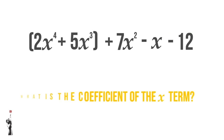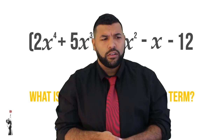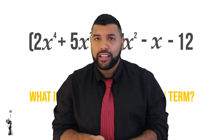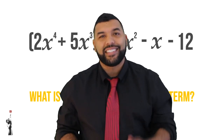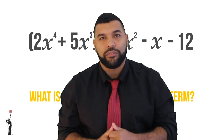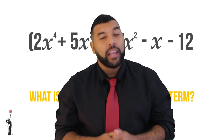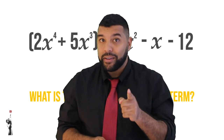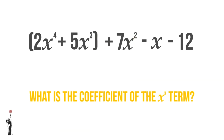What is the coefficient of the X cubed term? We know that the X cubed is inside the brackets, but even though it's inside the brackets, it still has a coefficient. The coefficient is the number in front of the variable. So if we look at that X cubed term, the number in front is 5.